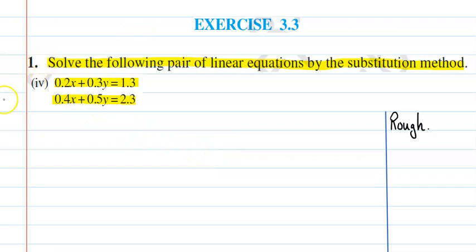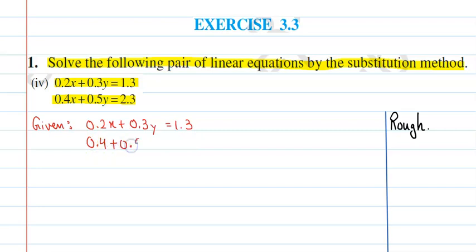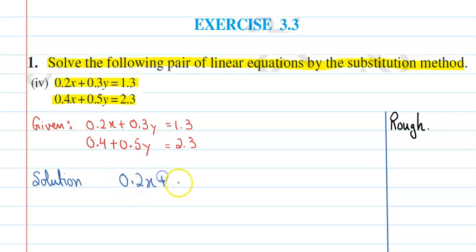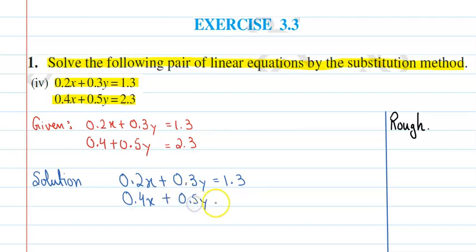सबसे पहले हम यहाँ पर अपनी given equations लिखेंगे कि हमारे पास equations क्या-क्या given हैं। Given is: 0.2x plus 0.3y equal to 1.3. Second equation is 0.4x plus 0.5y equal to 2.3.